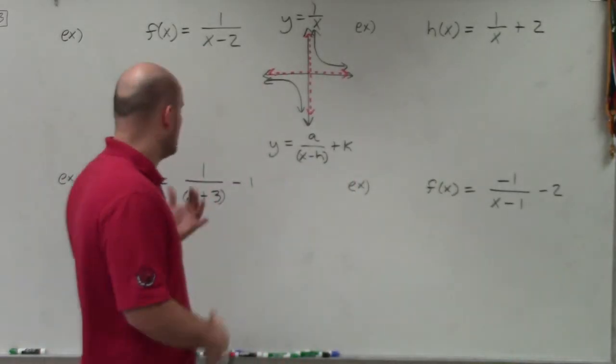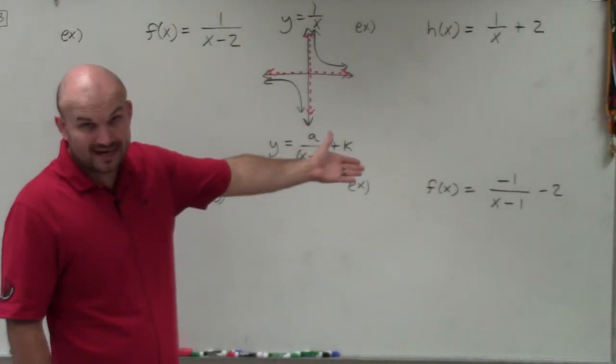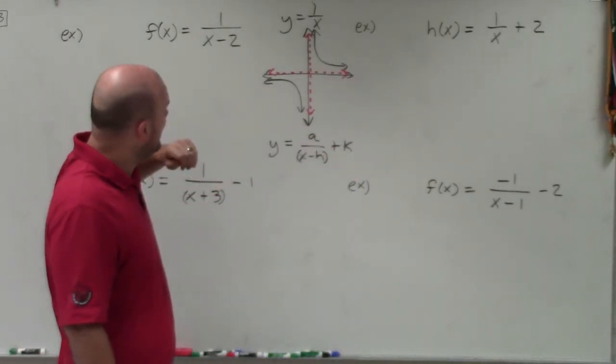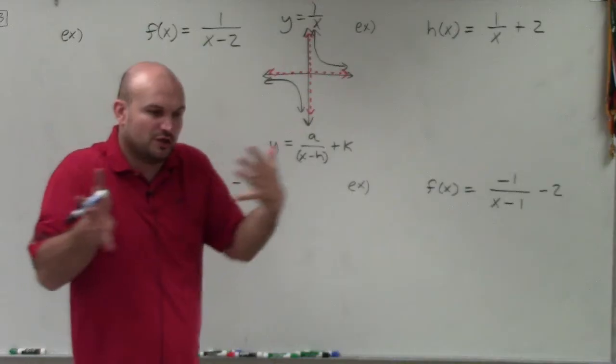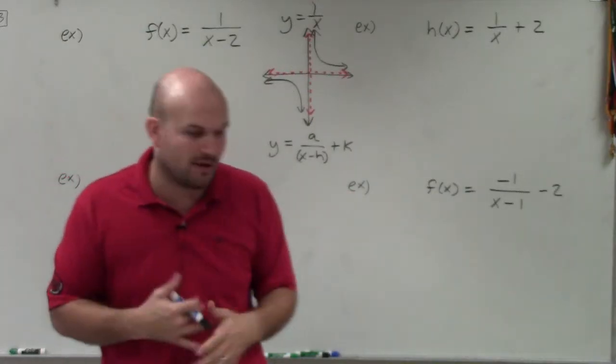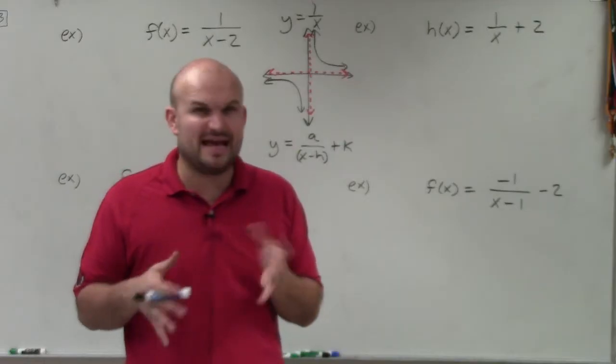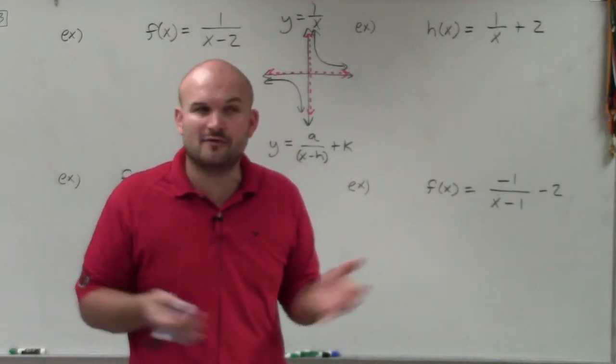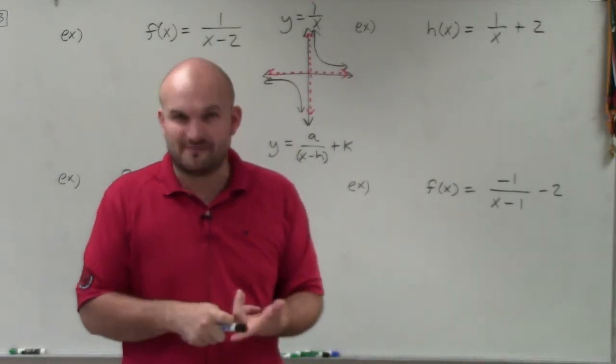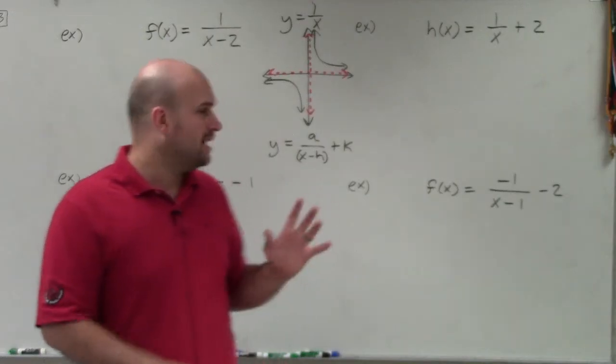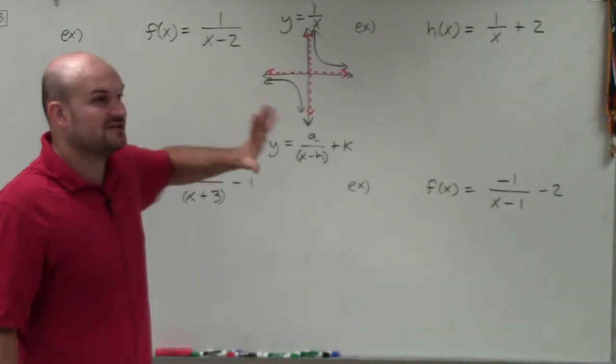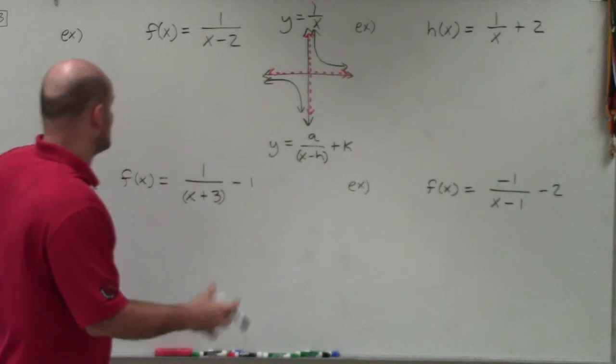Now, we're not going to get much into the compression and stretching. I do have one where it's negative. We'll talk about reflection here. But basically, we're just going to kind of get into the shifting of the graph left and right, up or down. Because once we start to get into a being a number other than 1 or negative 1, then we start using graphing utility or a table of values.